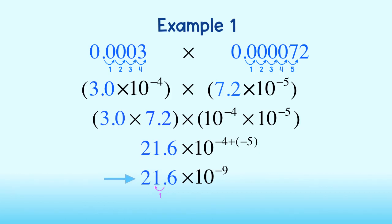And since in doing so, the factor got smaller by a power of 10, I must make sure that my power of 10 on the right gets larger by 1 power of 10. Great. Our answer in scientific notation is 2.16 times 10 to the negative 8th.